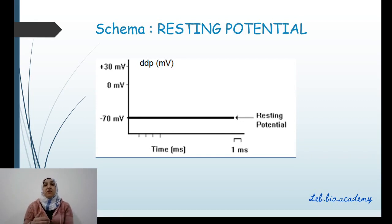Whenever they ask you to schematize the resting potential, you have to draw this. One axis is the potential difference in mV and the other is time in milliseconds. You have to draw a horizontal constant line at minus 70 mV, and don't forget to write down a title and to label your drawing.